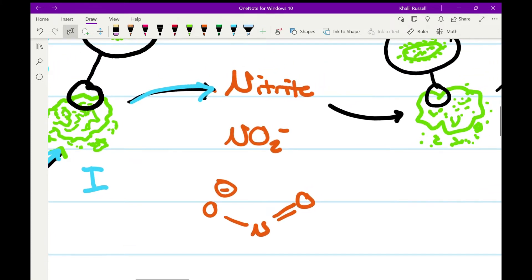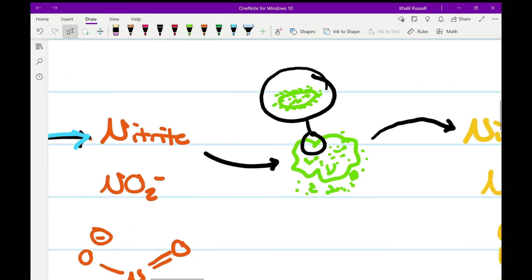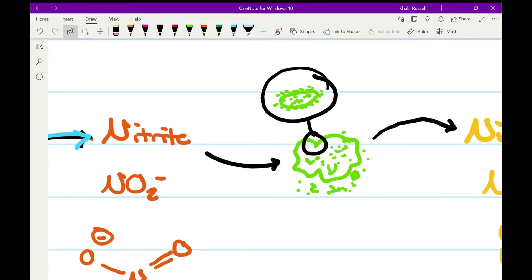So you don't want to have nitrites in your aquarium. Of course it's better than ammonia, but it's not what you want either. It's a problem if you have nitrites. They're also going to be causing problems for your fish.